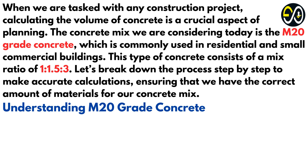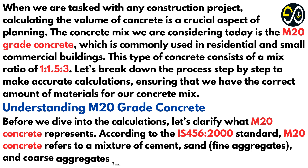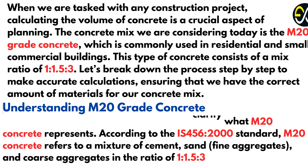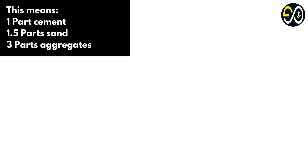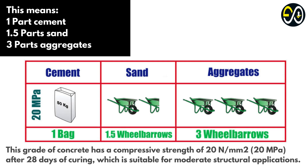Understanding M20 grade concrete. Before we dive into the calculations, let's clarify what M20 concrete represents. According to the IS-456-2000 standard, M20 concrete refers to a mixture of cement, sand, fine aggregates and coarse aggregates in the ratio of 1 to 1.5 to 3. This means 1 part cement, 1.5 parts sand, and 3 parts aggregates. This grade of concrete has a compressive strength of 20 newtons per square millimetre (20 megapascals) after 28 days of curing, which is suitable for moderate structural applications.